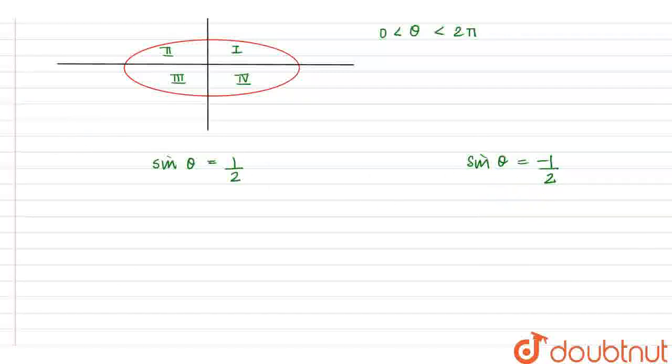So, let us separately find the value for theta. Here, we will get that theta can equal π by 6 or 5π by 6. And if sin theta equals minus 1 upon 2, then theta can equal π plus π by 6 or 2π minus π by 6.